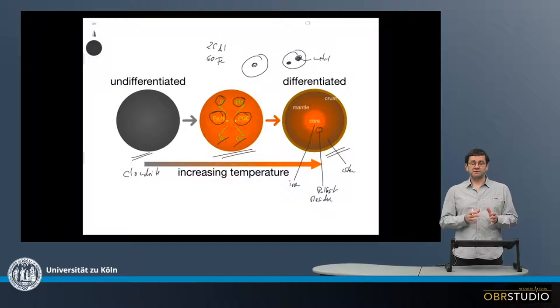So this is what happened to the planetesimals in the early solar system, and it's important to know there's the undifferentiated and differentiated, and this is also used, for example, for classification purposes.